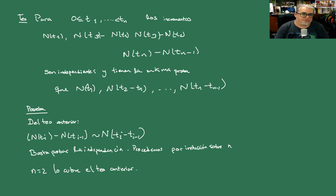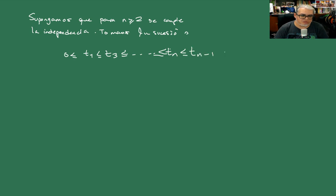Vamos a suponer que para alguna N mayor o igual que 2 se cumple la independencia. Entonces, tomamos la sucesión de tiempos: cero, T1, T2, T3, ... TN, TN menos 1, etcétera.